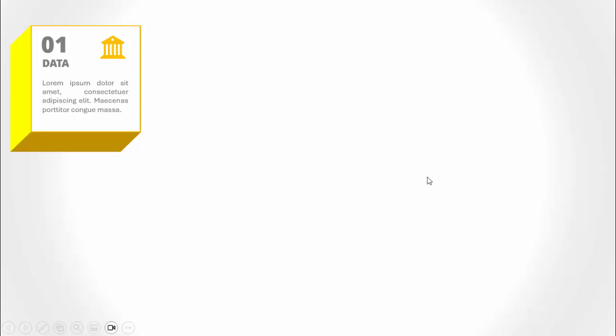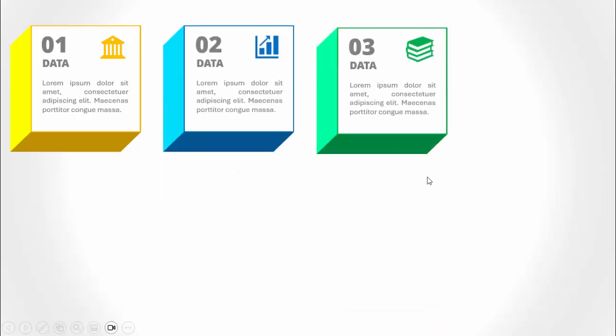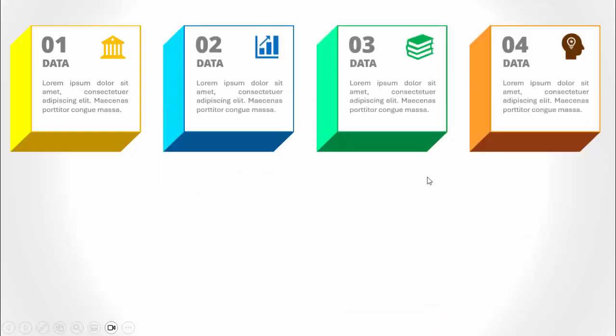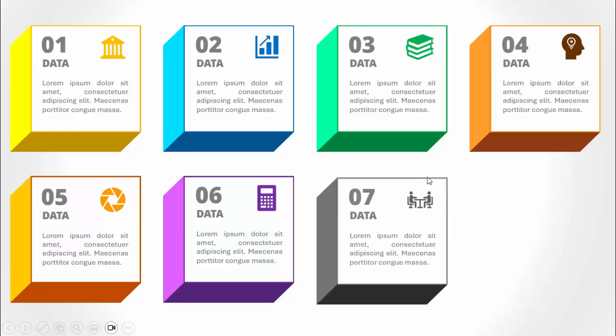In today's tutorial I'm going to show you how to create an eight boxes infographic slide in PowerPoint. This is how the slide works — when I click it will show me the first box, a kind of 3D box where I put the option number one, add the icon, and you can add some detail text. When I click it will come with a different color combination: option 2, 3, 4, 5, 6, 7.